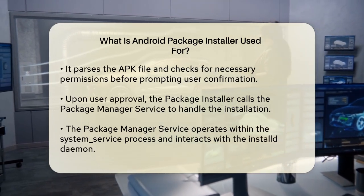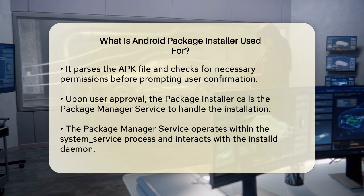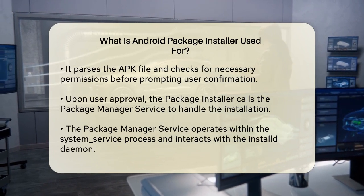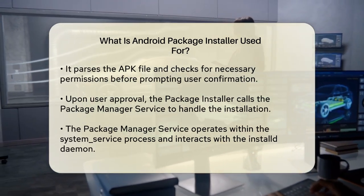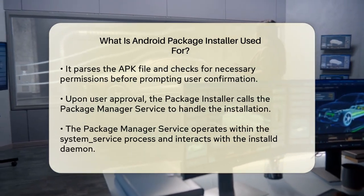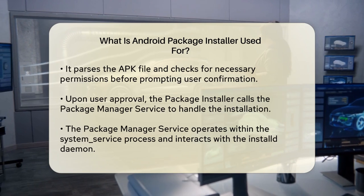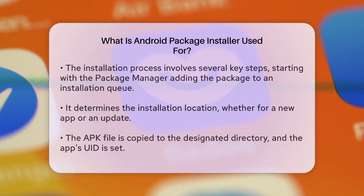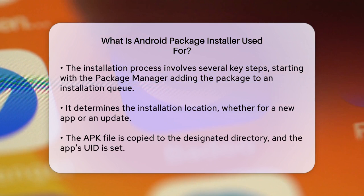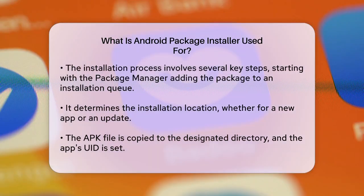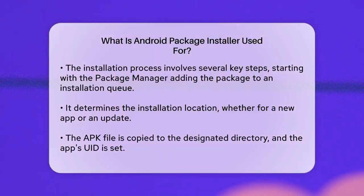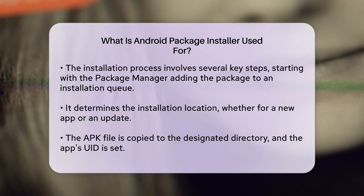This service runs in the system service process and communicates with the installed daemon, a native process that executes the installation steps. The Package Manager adds the package to a queue for installation, determines the appropriate location for the package, whether it's a new installation or an update, copies the APK file to the designated directory, sets the UID for the app, and requests the installed daemon to perform the installation.